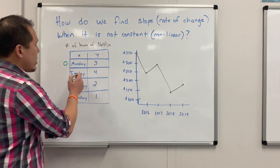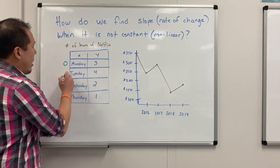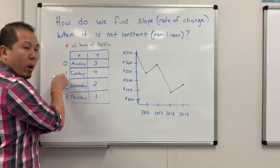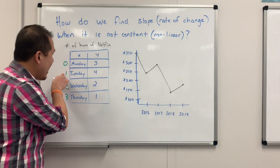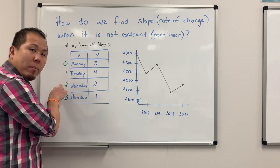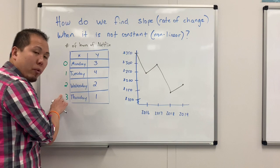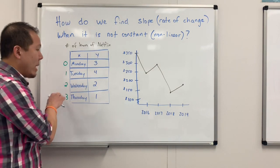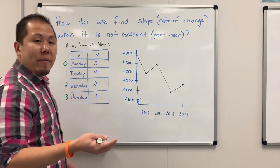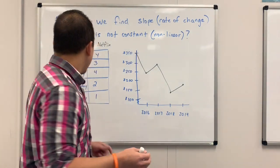And then we can turn this into one, two, three. So this is one day after Monday, two days after Monday, three days after Monday. And now we find the rate of change.